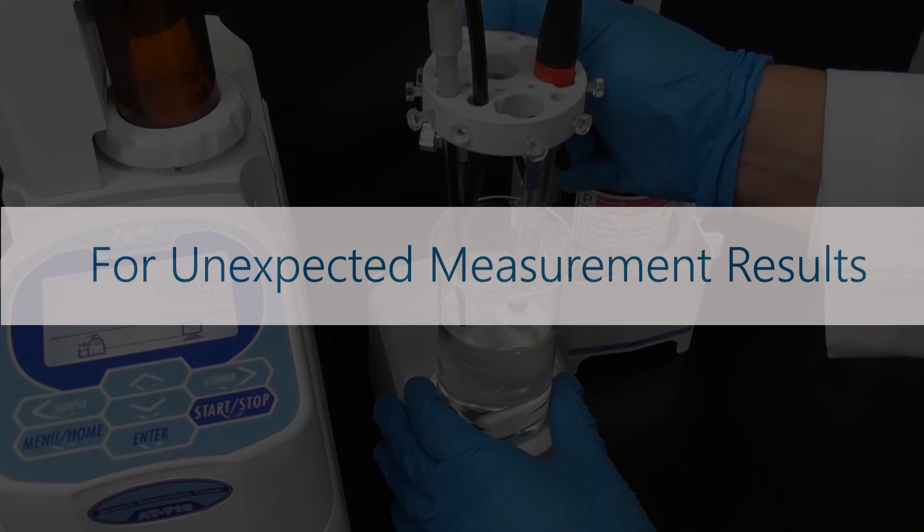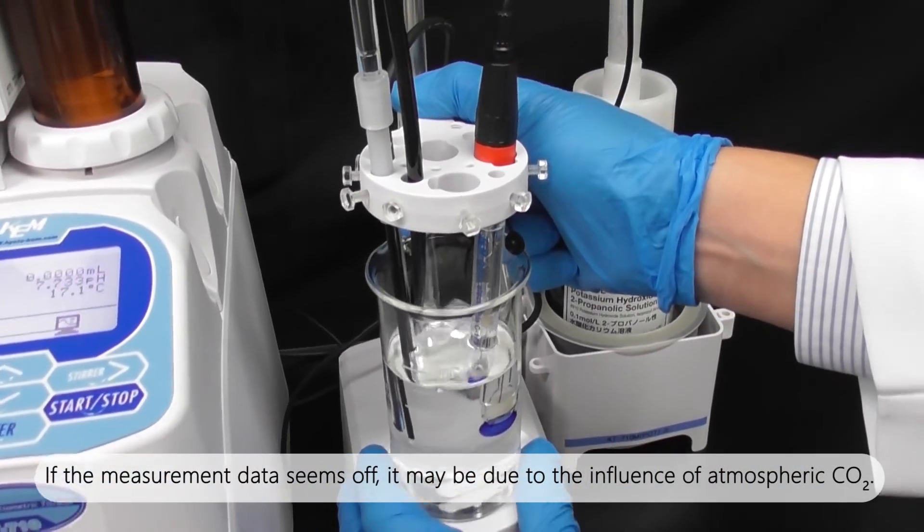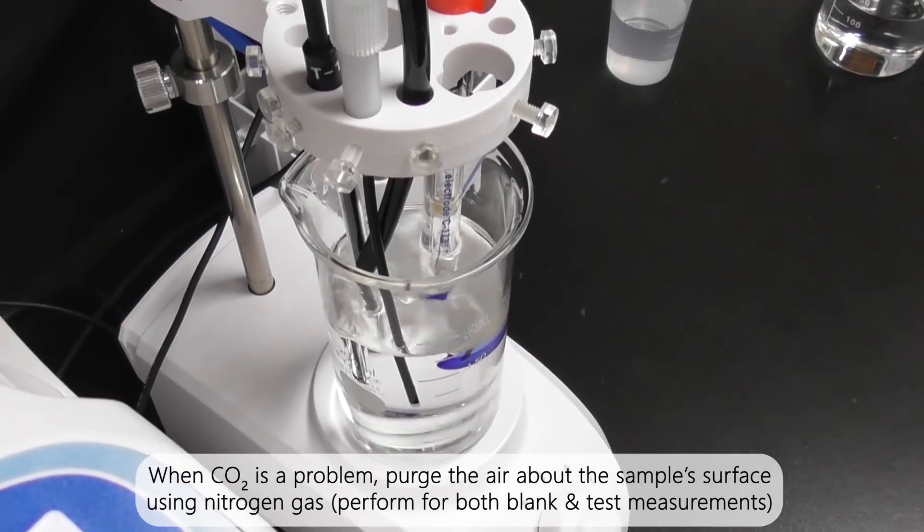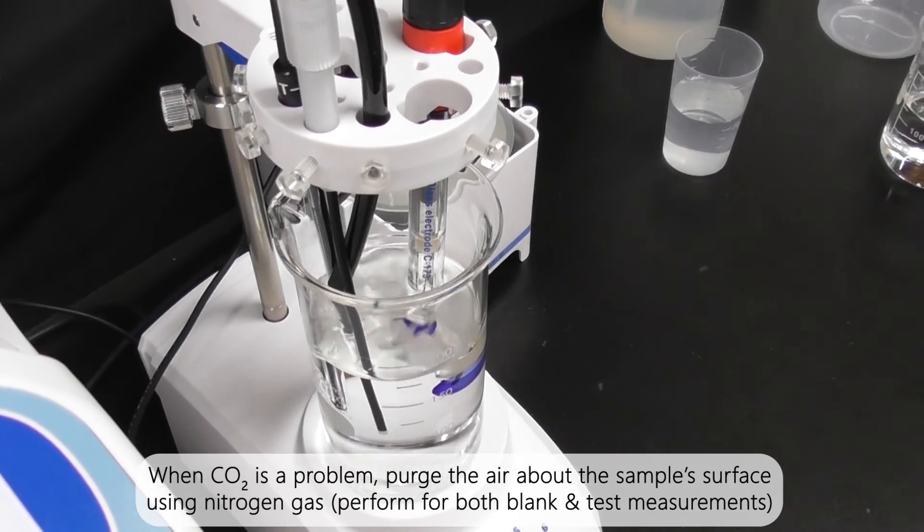For unexpected measurement results: If the measurement data seems off, it may be due to the influence of atmospheric carbon dioxide. When carbon dioxide is a problem, purge the air around the sample surface using nitrogen gas.